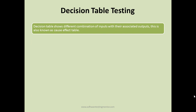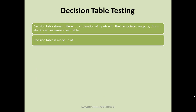A decision table shows different combinations of inputs with their associated outputs. This is also known as a cause-effect table. In a decision table, you have different combinations of inputs — for example, Condition 1 and Condition 2 — and based on changes in those conditions, your outcome is defined. That's why it is also known as a cause-effect table.